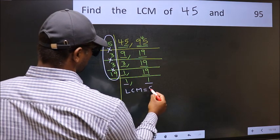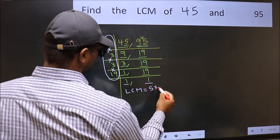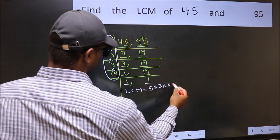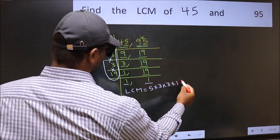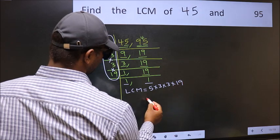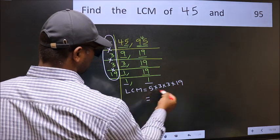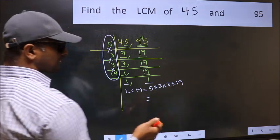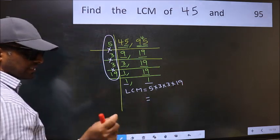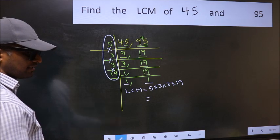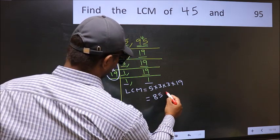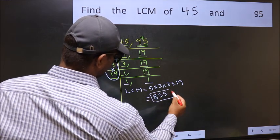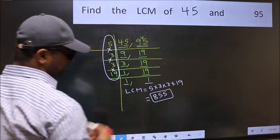That is 5 times 3 times 3 times 19. When we multiply these numbers we get 855, which is our LCM.